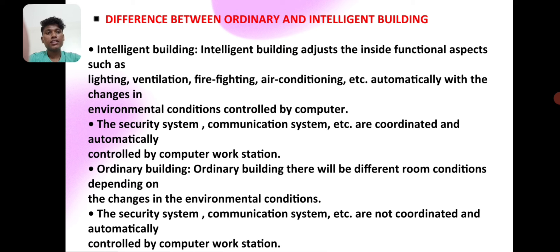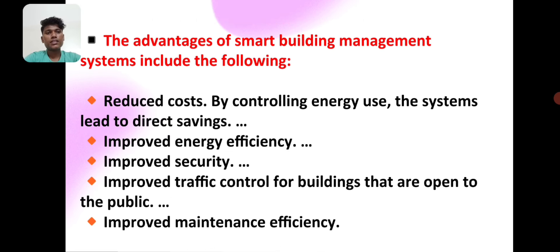Difference between ordinary and intelligent building. An intelligent building can change the inside functional aspects such as lighting, fire fighting, air conditioning, etc., automatically with changes in environmental conditions, controlled by computer. The security system, communication system, etc., are coordinated and automatically controlled by a computer workstation. In an ordinary building, different room conditions depend on the changes in environmental conditions, and the security and communication systems are not coordinated or automatically controlled by a computer workstation.